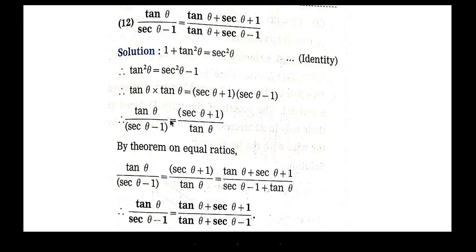So we have obtained the left hand side of our equation: tan theta upon sec theta minus 1. Applying the theorem on equal ratios, we can write tan theta upon sec theta minus 1 equals sec theta plus 1 upon tan theta equals tan theta plus sec theta plus 1 upon sec theta minus 1 plus tan theta. Therefore it is proved that tan theta upon sec theta minus 1 is equal to tan theta plus sec theta plus 1 upon tan theta plus sec theta minus 1.